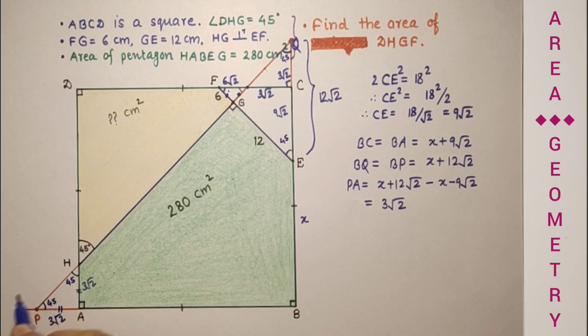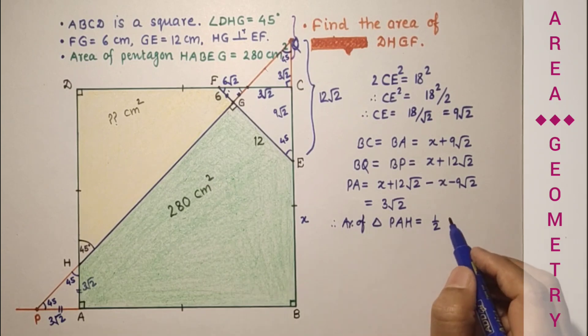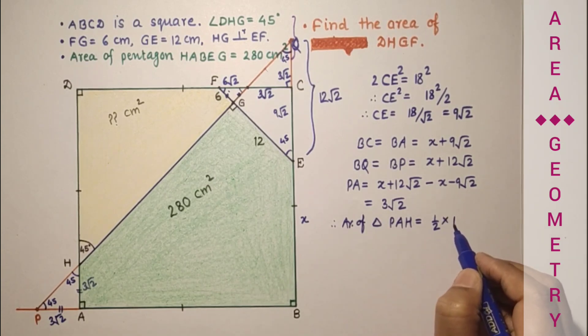So this is 3 root 2, and therefore this will also be 3 root 2. So area of this triangle is half into 3 root 2 into 3 root 2, which is 18 by 2, which is 9.